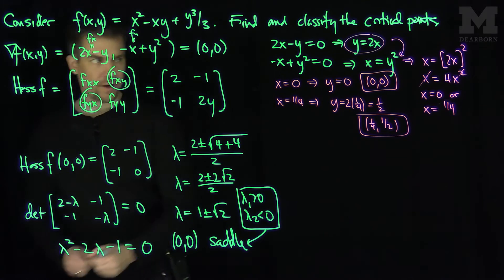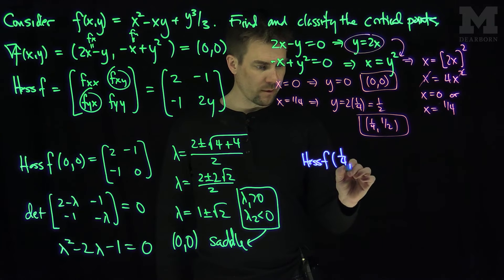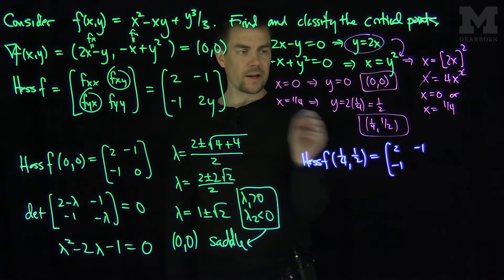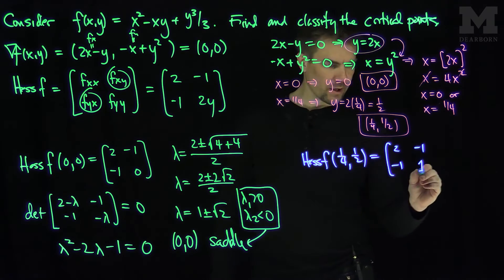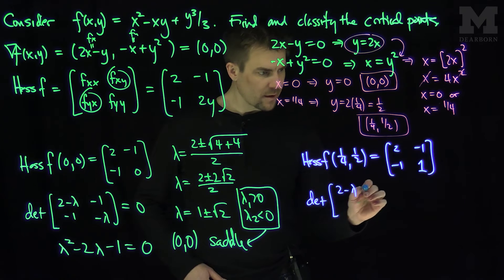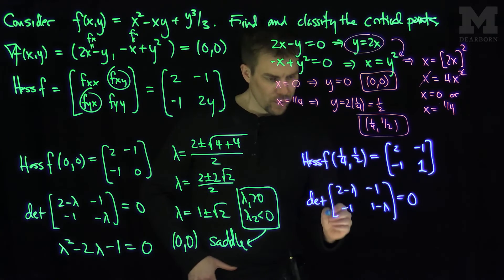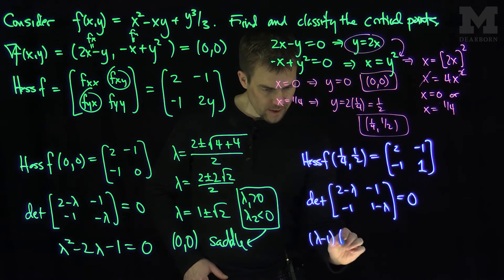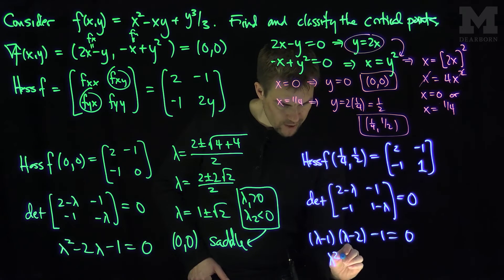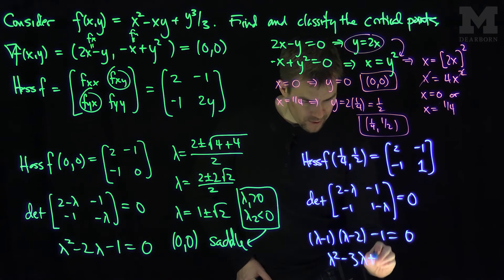Now let's look at the Hessian at (1/4, 1/2). Plugging in y = 1/2, the matrix becomes [2, -1; -1, 1]. We compute det([2-λ, -1; -1, 1-λ]) = 0, which expands to (λ-1)(λ-2) - 1 = 0, giving λ² - 3λ + 1 = 0.